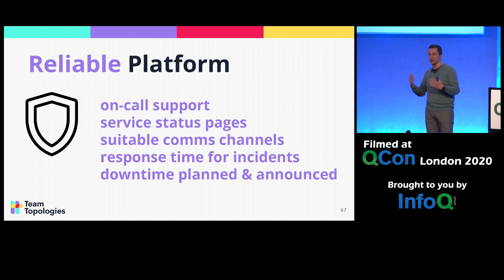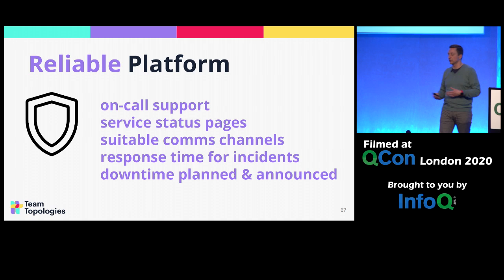If you have downtime or degraded performance — for example, if you're updating to a new Kubernetes version — then we need to plan that and coordinate with the teams that might be impacted. We can't just assume it's going to be fine.